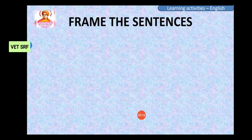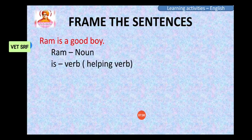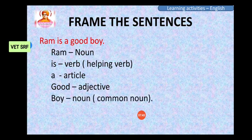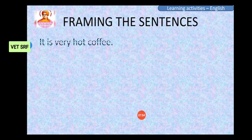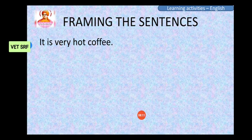Now we are going to frame sentences with the help of grammar. 'Ram is a good boy.' Ram is a noun — a proper noun. Is is a verb. A is an article. Good is an adjective. Boy is a noun — a common noun. Another example: 'It is very hot coffee.' It is a pronoun. Is is a verb. Very hot is an adjective. Coffee is a common noun.